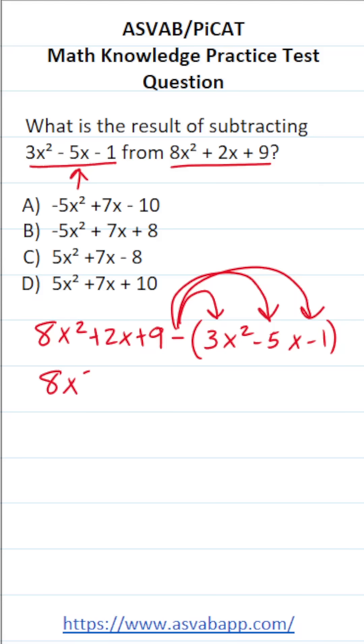So this becomes 8x squared plus 2x plus 9. A negative times a positive is going to be a negative. So negative times positive 3x squared is going to be negative 3x squared. A negative times a negative is going to be a positive. So negative times negative 5x is going to be positive 5x.